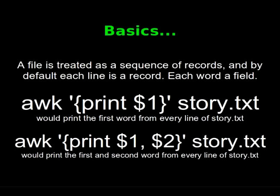Moving on to the basics. A file is treated as a sequence of records — each line is a record and each word represents a field. AWK is called from the terminal window and we pass it a pattern and a file name. We could also pipe information into AWK and then pipe it out into another application. Let's look at the first example: AWK print $1 story.txt — the pattern is encased in single quotes and curly brackets.